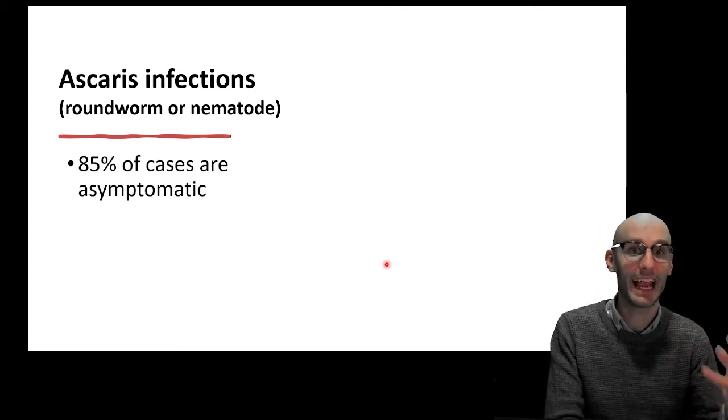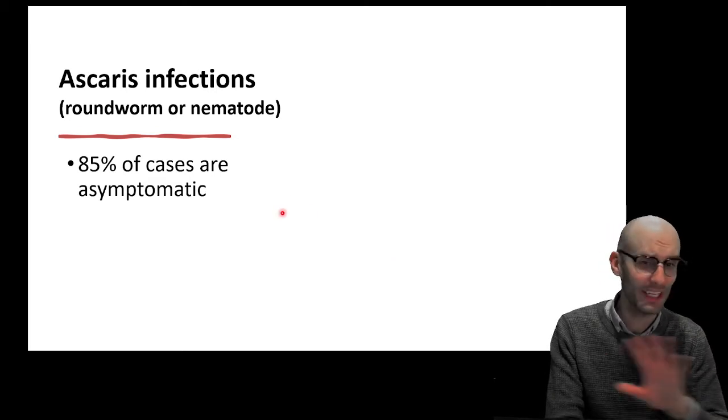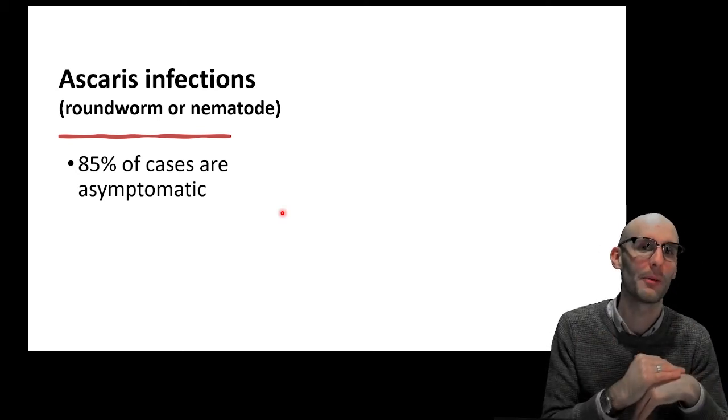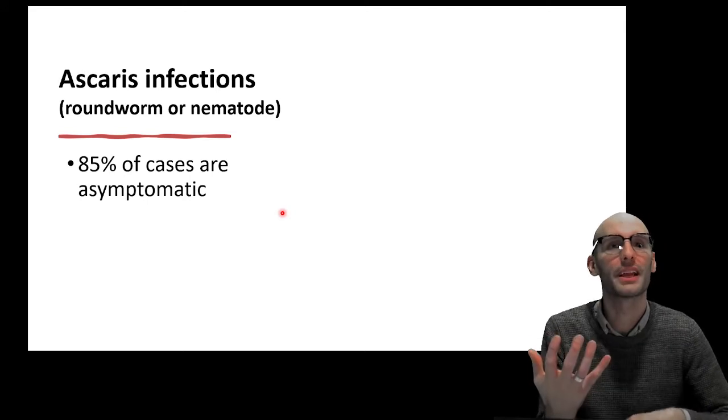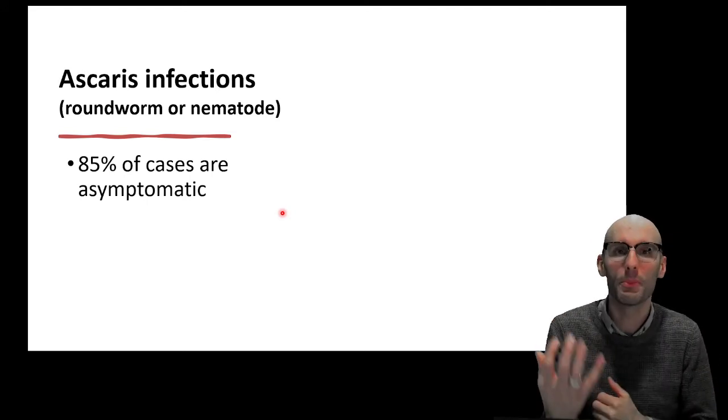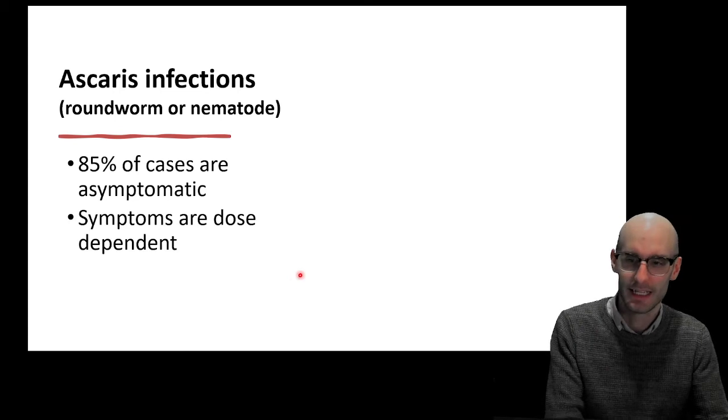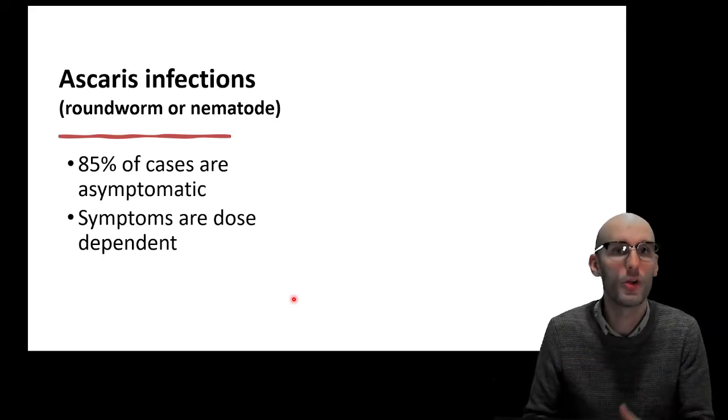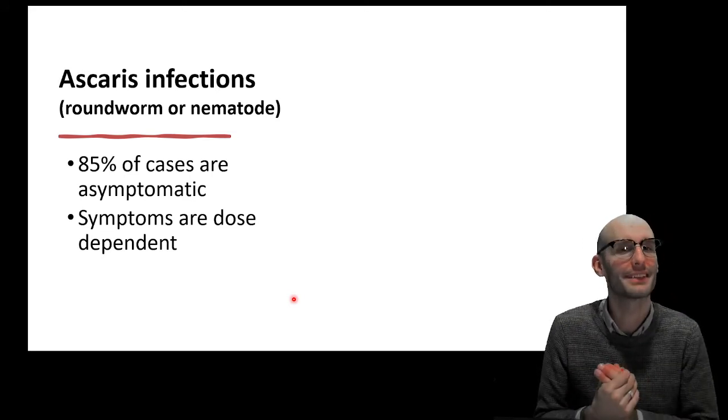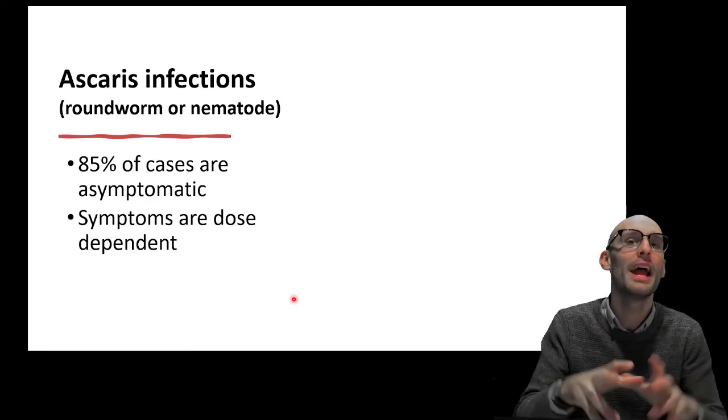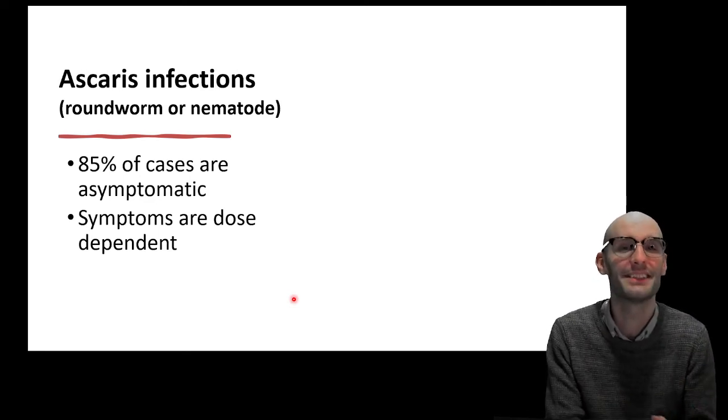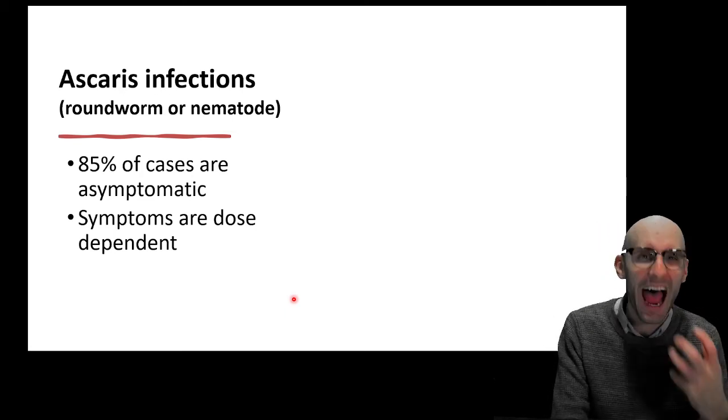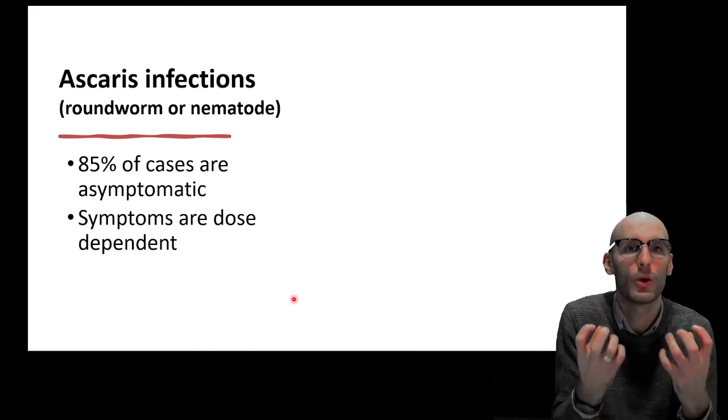85% of these cases are asymptomatic, they don't cause any symptoms at all. We're going to cover why this actually puts them in the iffy category when it comes to obligate parasite. Yes, they're an obligate organism but are they an obligate pathogen parasite? The symptoms are really dose dependent. If you have one or two, the symptoms are going to be incredibly low, but they do get up to hundreds of worms in a single individual, particularly children who are very vulnerable.